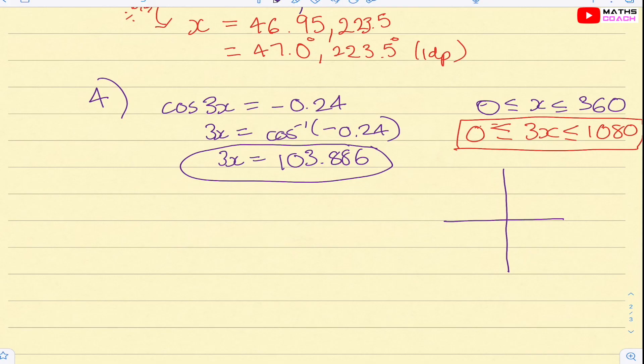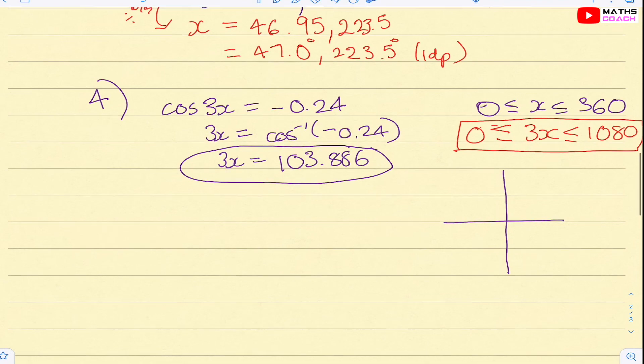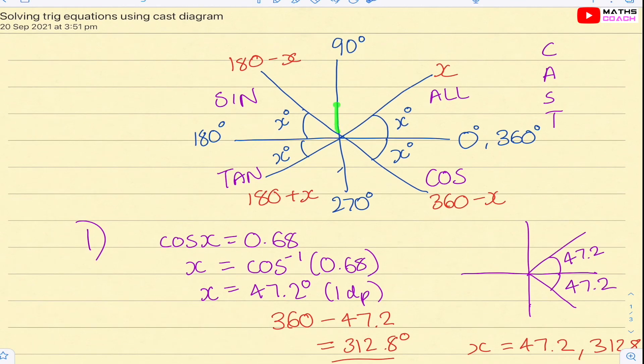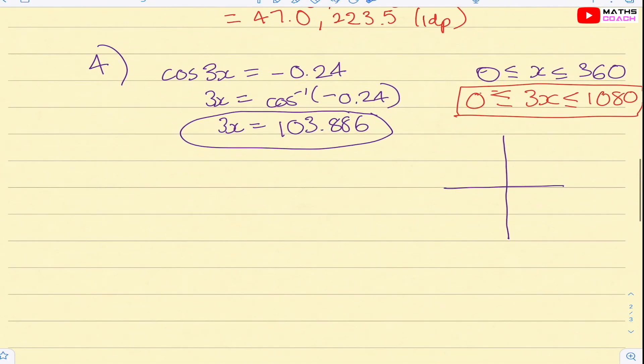Right. So what we need to do is we need to find the acute angle. However, we should have alarm bells ringing because now we have a negative. Now this is going to change our answer because we go back to our diagram. We know that in these two quadrants, only sine and tan are positive, which by default means that cosine will be negative. So we're looking and concentrating in these two quadrants for cosine.